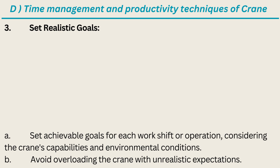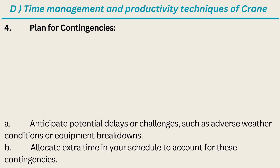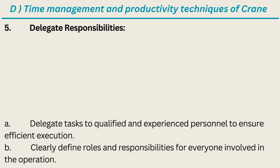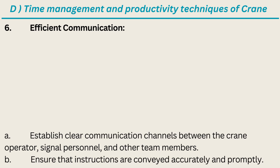Third: Set Realistic Goals — set achievable goals for each work shift or operation, considering the crane's capabilities and environmental conditions. Avoid overloading the crane with unrealistic expectations. Fourth: Plan for Contingencies — anticipate potential delays or challenges such as adverse weather conditions or equipment breakdowns. Allocate extra time in your schedule to account for these contingencies. Fifth: Delegate Responsibilities — delegate tasks to qualified and experienced personnel to ensure efficient execution. Clearly define roles and responsibilities for everyone involved in the operation. Sixth: Efficient Communication — establish clear communication channels between the crane operator, signal personnel, and other team members. Ensure that instructions are conveyed accurately and promptly.